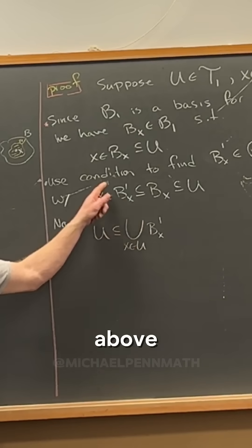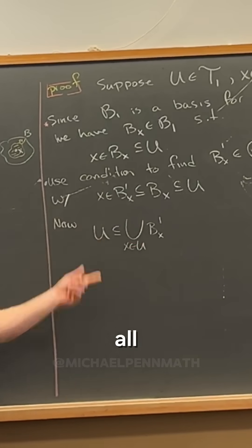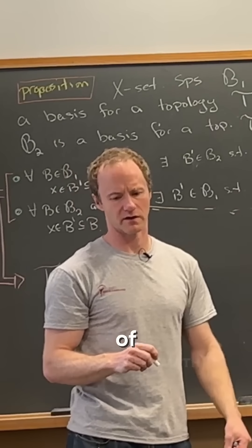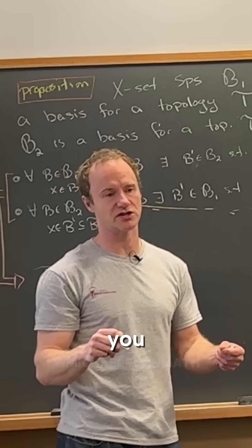But then if we union them all together we just get all of U. This is similar to one of the things from the video, which is like essentially you can build any open set out of base open sets via this unioning procedure.